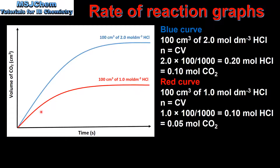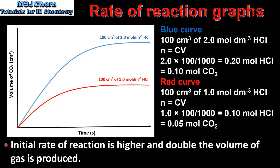Next we compare the initial rate of reaction for both curves. The gradient of the line tells us about the rate of reaction — the steeper the gradient, the faster the rate. The blue curve has a steeper gradient, therefore a faster rate of reaction, due to the higher concentration of acid used. The higher the concentration of acid, the faster the rate of reaction. To summarize: for the blue curve, the initial rate of reaction is higher and double the volume of gas is produced.